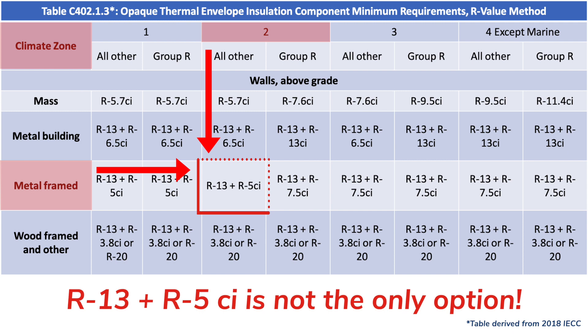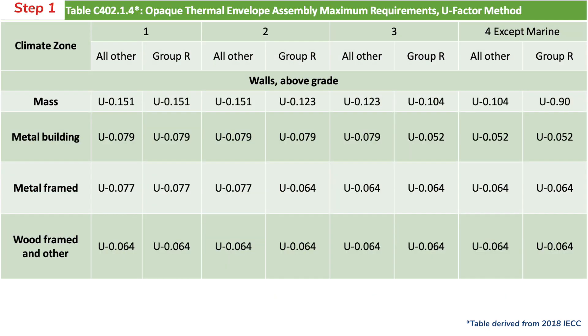The great thing about this approach is that it gives more flexibility in terms of where you place your insulation and what thicknesses are required. So to show how this can be determined, the first step is finding out the maximum allowable U-factor for the thermal envelope based on the building's location and the wall type.